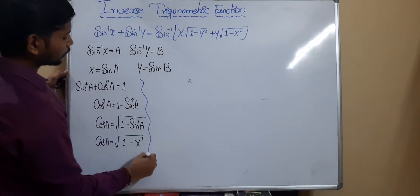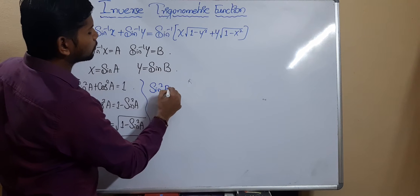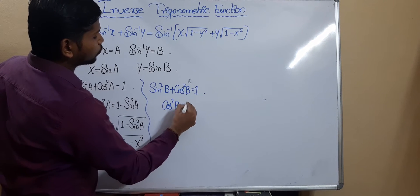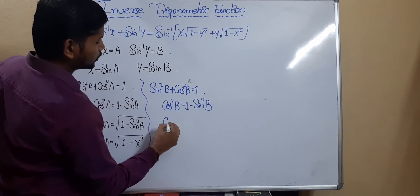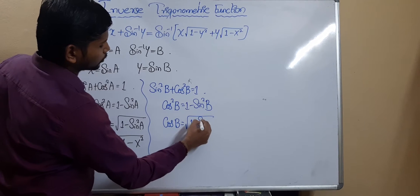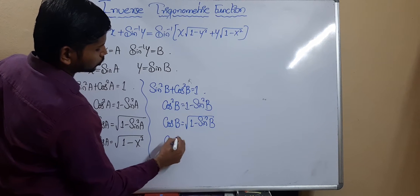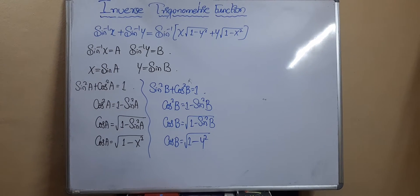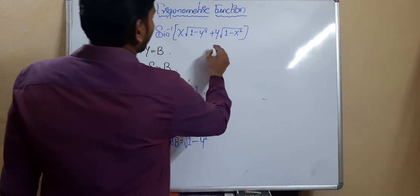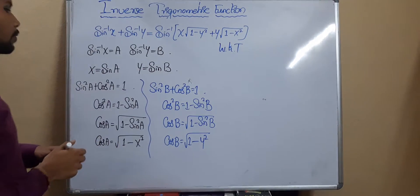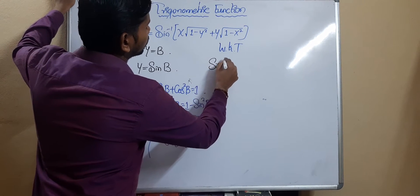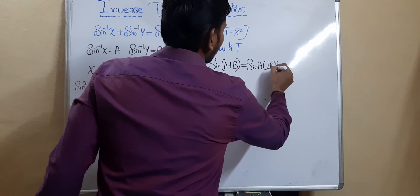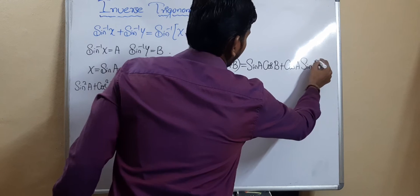In a similar manner, sin²b + cos²b = 1, so cos²b = 1 − sin²b, and cos b = √(1 − sin²b) = √(1 − y²). We already know the formula from trigonometry: sin(a + b) = sin a·cos b + cos a·sin b.